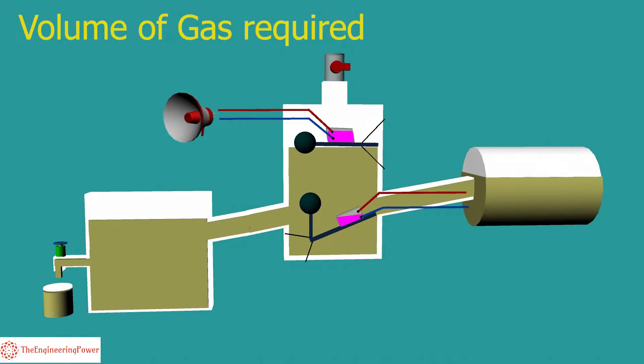Volume of gas required to initiate the alarm circuit varies from 110 cc to 250 cc depending upon the size of the relay. In most relays it is 200 cc.